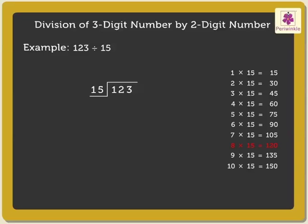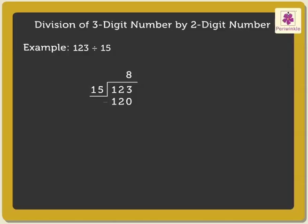Hence, we write 8 in the quotient and 120 below 123 and subtract to get 3. So, we get 8 as the quotient and the remainder is 3.